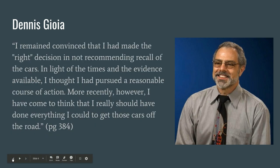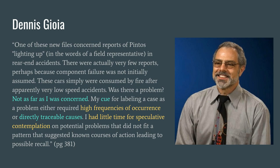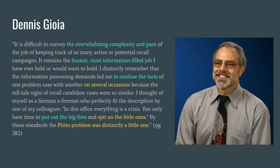Gioia explicitly says he is apologetic and thinks he made the wrong decision — he regrets it. At the time, he was convinced he had made the right decision; in light of the times and the evidence available, he thought he'd pursued a reasonable course of action. But more recently he's come to think he really should have done everything he could to get those cars off the road. He was following the script, doing his job, he thought. And Gioia spends a lot of time in the article explaining just how difficult the job was.